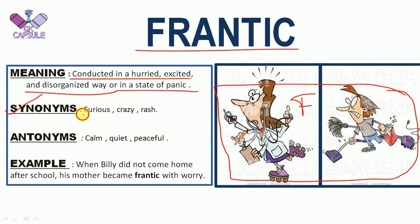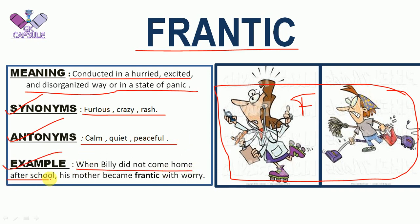Synonyms of FRANTIC: furious, crazy, rash. Antonyms: calm, quiet, peaceful. Example: when Billy did not come home after school, his mother became frantic with worry — meaning his mother was in a panic.